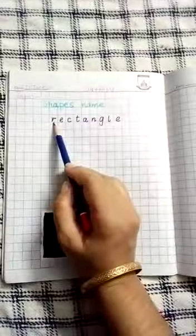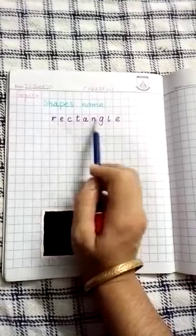Read the spelling of rectangle: R-E-C-T rect, A-N-N rect, and G-L legal, rectangle.